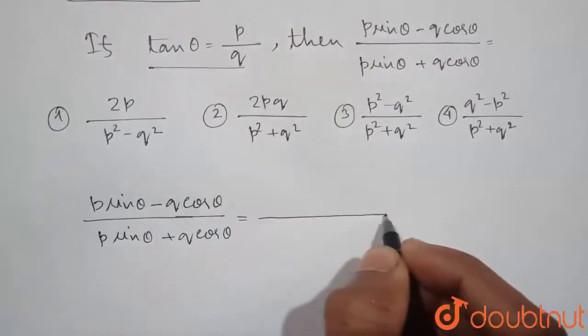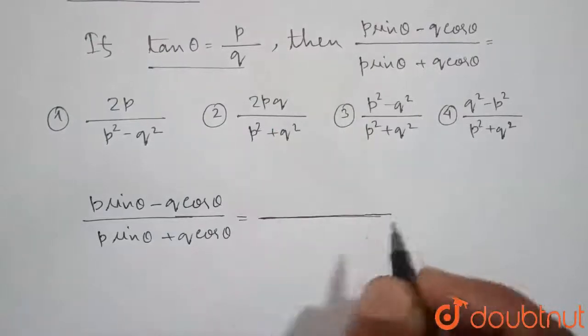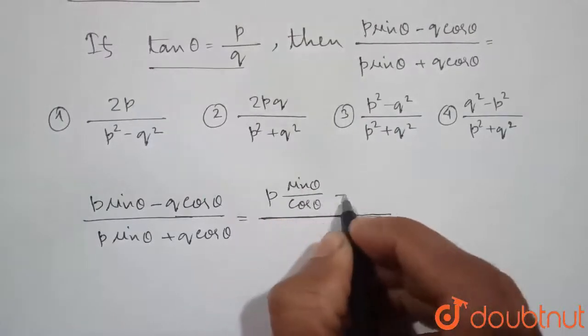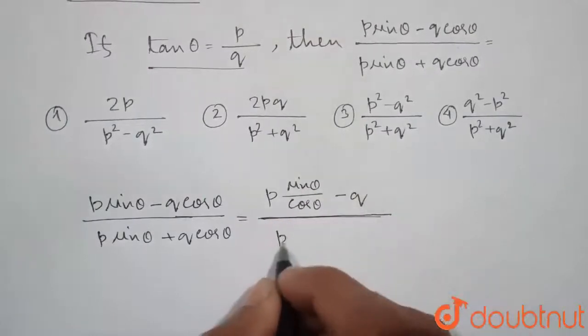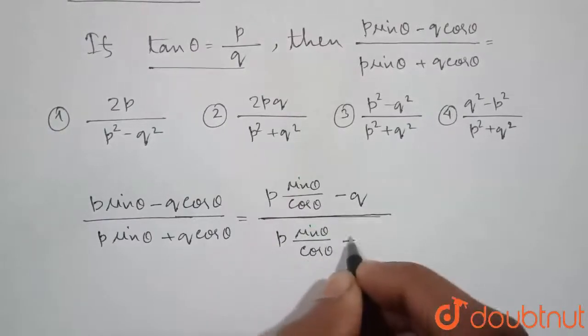Now dividing both denominator and numerator by cos theta, we will get p sin theta divided by cos theta minus q, p sin theta divided by cos theta plus q.